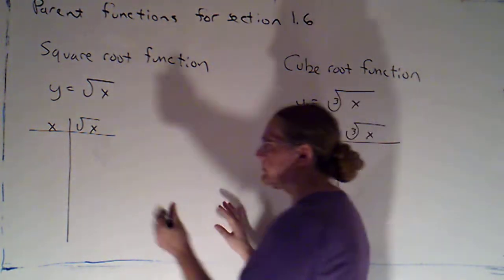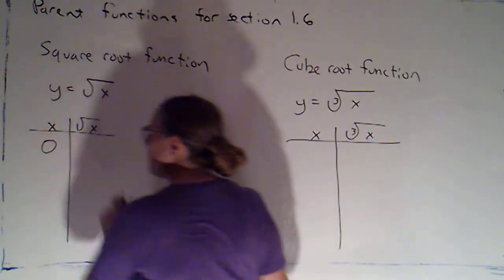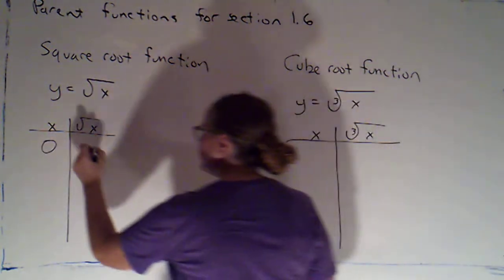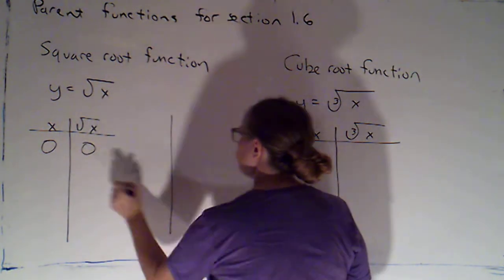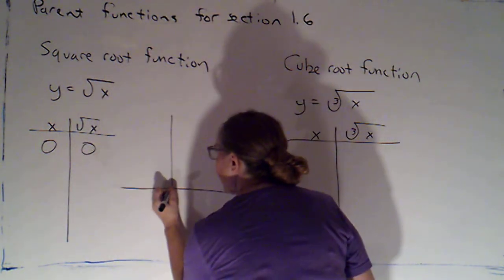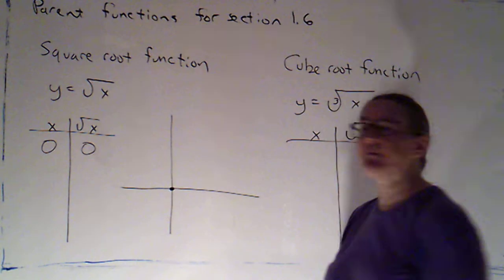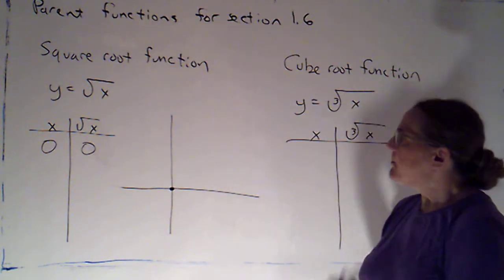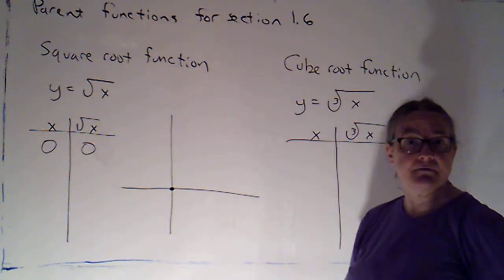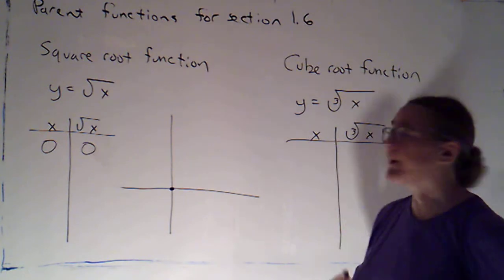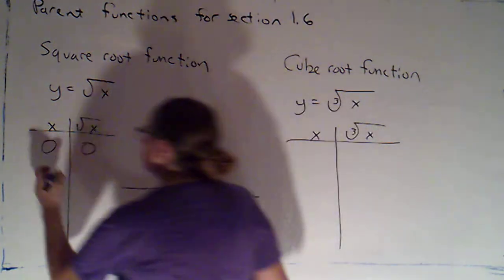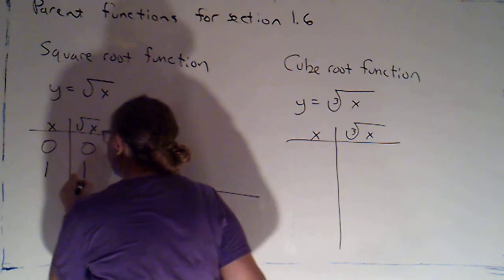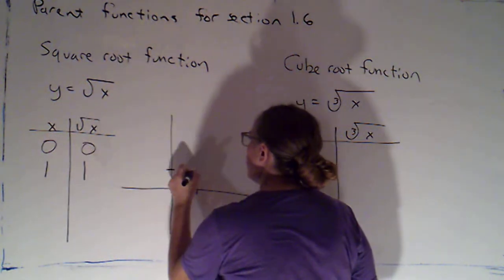So I'm definitely going to want to plug in 0 because that's the smallest that x could be, and the square root of 0 is just 0. So I can go ahead and plot that point. The origin is going to be on this graph. But then I'm only going to plug in positive numbers here because I can't take the square root of a negative.